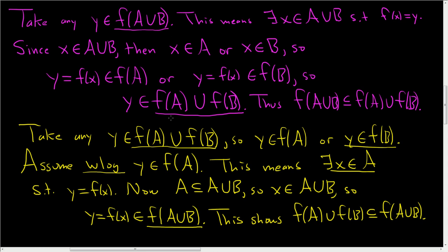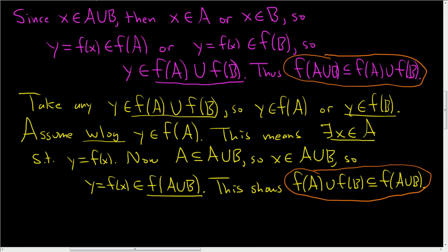So we showed both inclusions. The first one, we proved it up here. And the second one is down here. So these two sets are subsets of each other. That means they must be the same set. So therefore, F of A union B is equal to F of A union F of B. And that's the proof. I hope this helps someone out there.